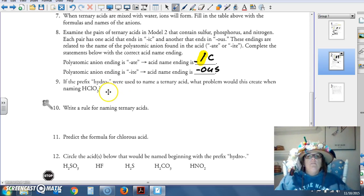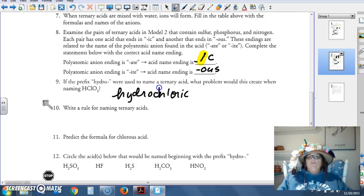If we used hydro, what could this create for this chloric acid? Hydrochloric was the name we used for HCl. This, if you put hydrochloric in, that could mean either HCl if we had started a chloric acid with hydro, or it could be an HClO3. So we drop the hydro when we name oxy acids.